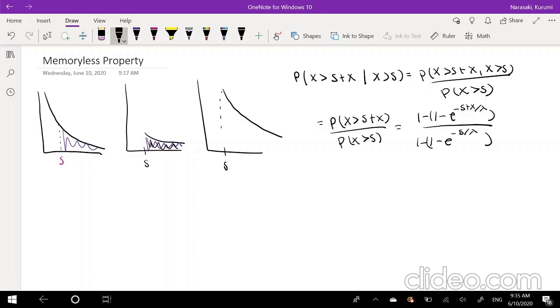So then we can actually simplify this because we know one minus one cancels on both sides and the negatives distribute. So this becomes positive. So it becomes e to the negative S plus X over lambda divided by e to the negative S over lambda.